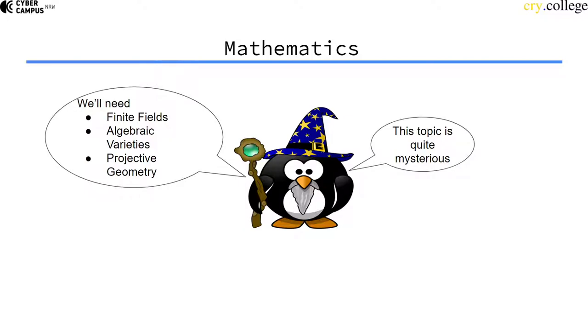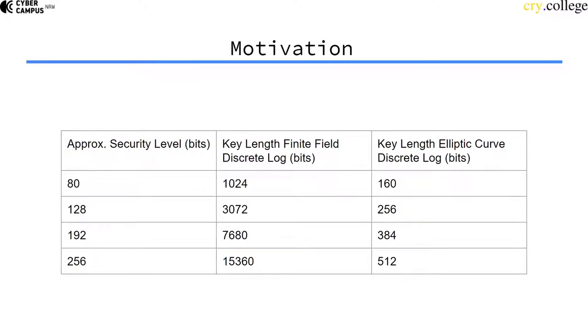What is the motivation behind elliptic curve cryptography? It's quite simple. Elliptic curve cryptography allows for much smaller key sizes. If we have an approximate security level of 128 bits, which is considered secure today, and we want to accomplish that with, for example, finite field Diffie-Hellman, we would need